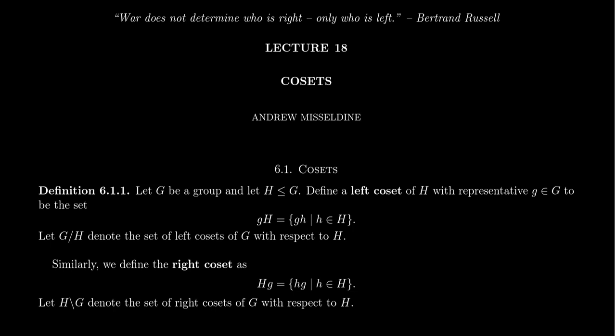What is a coset? Cosets are structures — they're sets, subsets of a group. Let's say that G is a group; this could be a finite group or an infinite group. We're going to take a subgroup H of G, meaning a group inside of a group using the same binary operation. H is a subset of G which is closed under multiplication, contains the identity, and contains inverses. You're going to see those three principles come into play in this lecture.